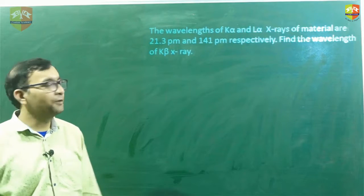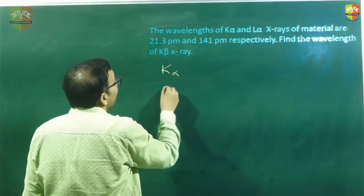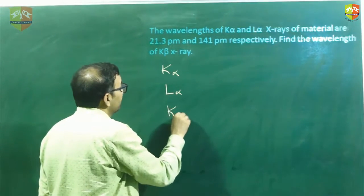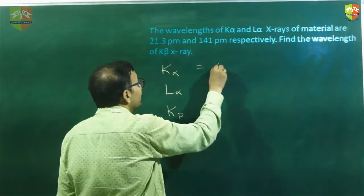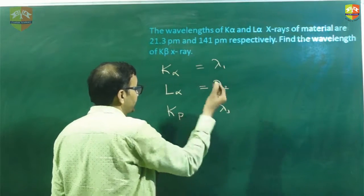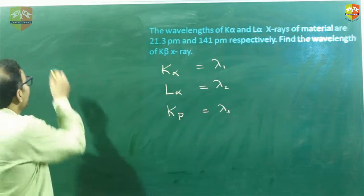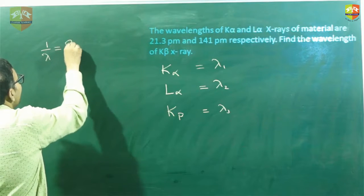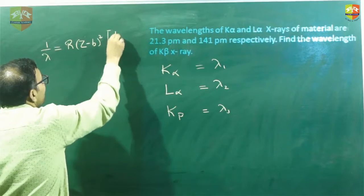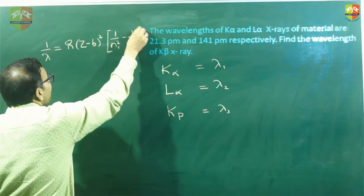Okay friends, here is the next question. In this question, the K-alpha wavelength and L-alpha wavelength are given, and we need to find the wavelength of K-beta. Let us call K-alpha wavelength as lambda 1, L-alpha as lambda 2, and K-beta as lambda 3. The formula that comes to mind is: 1 by lambda equals the Rydberg constant times (z minus b) squared times (1 by n1 squared minus 1 by n2 squared).